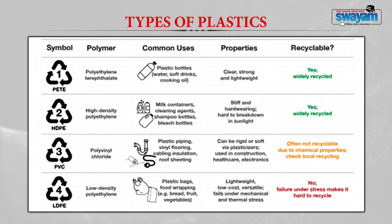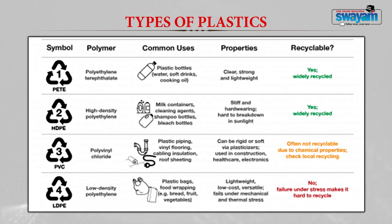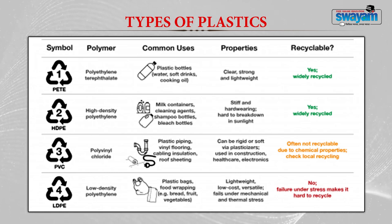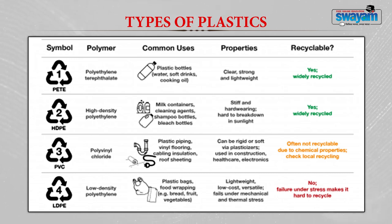The third type is polyvinyl chloride, used for manufacturing plastic pipes, vinyl flooring, cable insulation, and roof sheeting. They are rigid, made soft via plasticizers, and used in construction, healthcare, and electronic industries. Often they are not recycled because of their chemical properties, though sometimes local recycling is done.